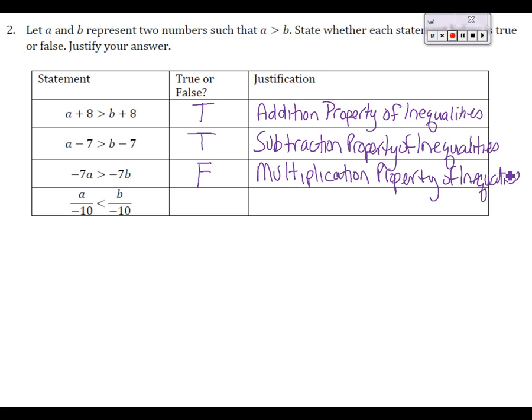For the last statement, notice we're dividing by a negative number but the inequality sign has been flipped. So this statement is actually TRUE. A started out larger than b, but by dividing by a negative number that expression is actually now smaller than the one on the right — so this is true.